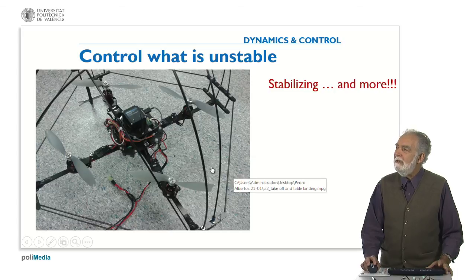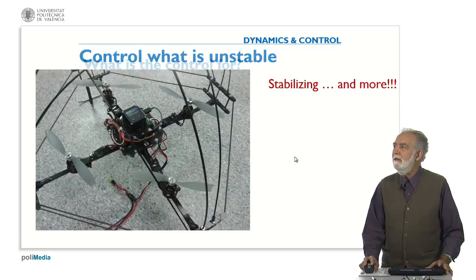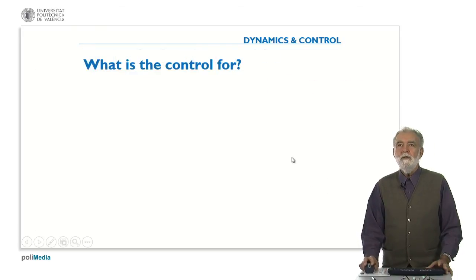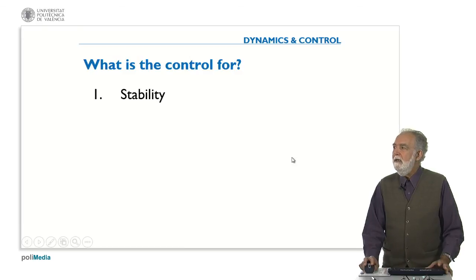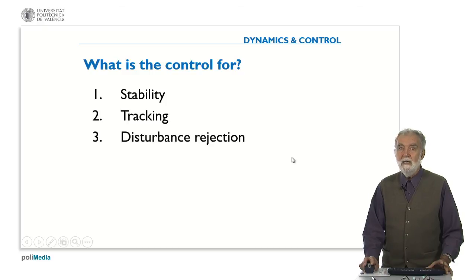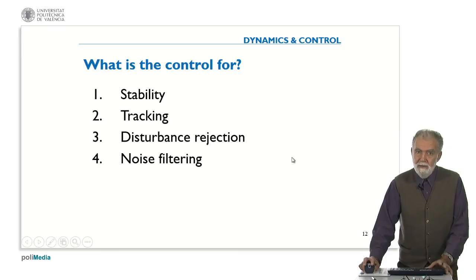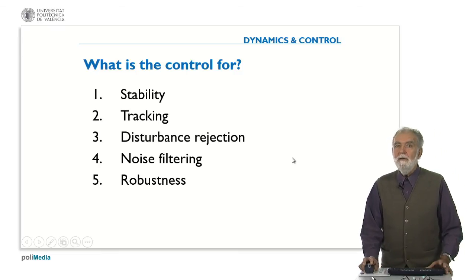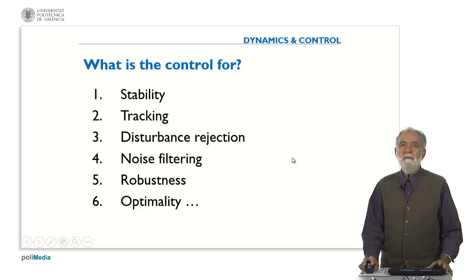So control can do stabilizing but much more. So what is control for in summary. It is to achieve stability but it is also for tracking. It is also for disturbance rejection. For noise filtering. We will see some examples with that. For improving the robustness against uncertainty of the plant. And also for optimality.